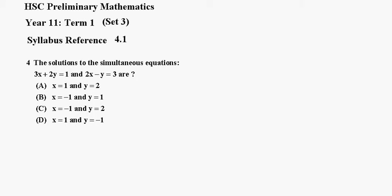Number 4. The solutions to the simultaneous equations 3x + 2y = 1 and 2x - y = 3 are a, b, c, or d.